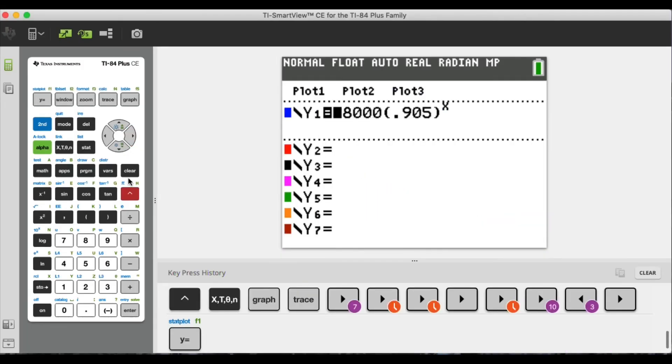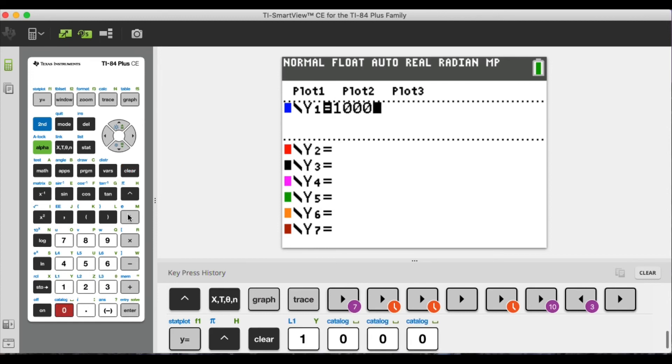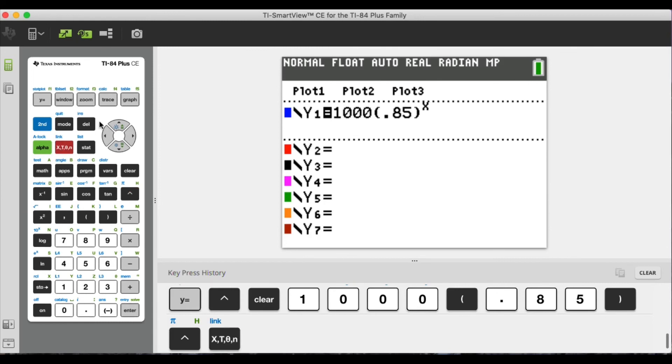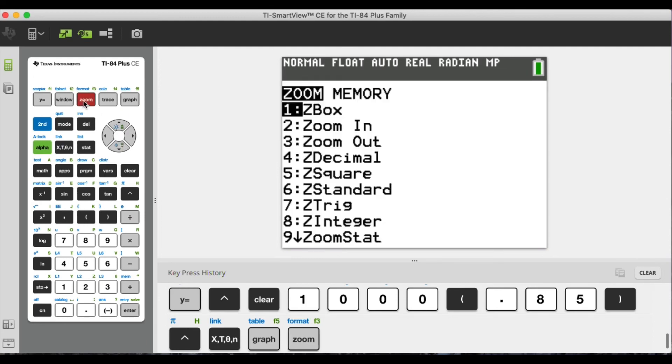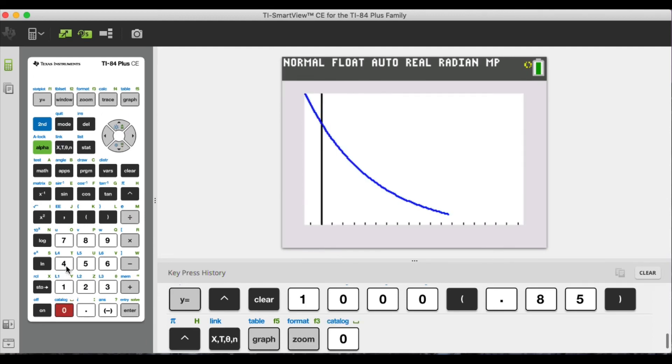Our last equation we have, let me find it one more time. So I'm going to do 1,000 parenthesis 0.85, close parenthesis, raised to the t or x. I'm going to graph it. And now we're looking for the value to fall below $1,000, but notice I don't see the graph. I'm going to hit zoom, zero again, to fit the graph into my window, and hit trace.